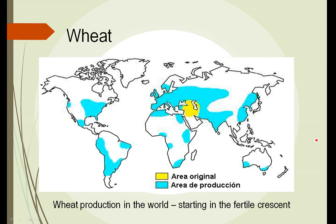This map shows where wheat originated — sort of a Middle Eastern plant, like so many things in the beginning of agriculture. The blue area is where wheat is commonly grown today. Notice that wheat can be grown in semi-tropical areas such as Florida, areas of Mexico, and parts of Brazil, but it also can grow in much colder regions across the northern U.S. and Canada, and across northern Europe and Asia.